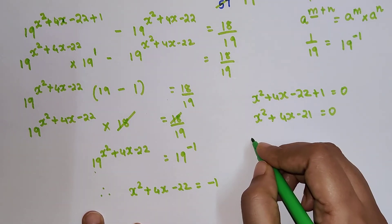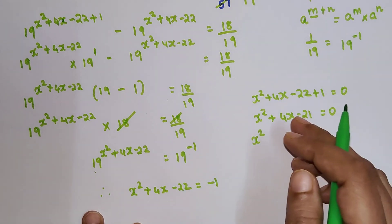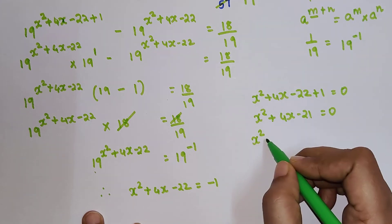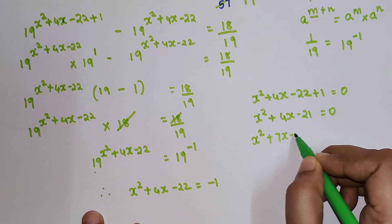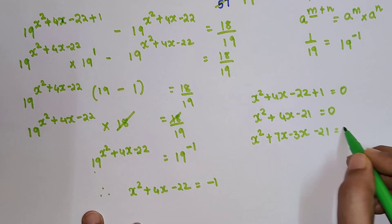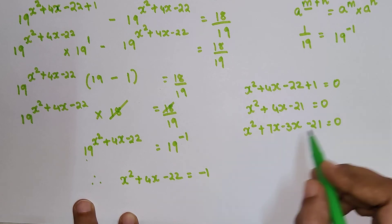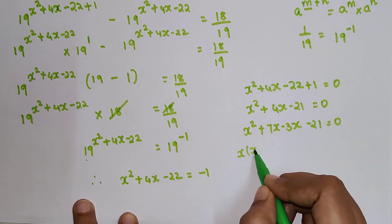To find this, I can factor 21 as 7 and 3. 7 and 3 on subtraction give you 4, so +7x -3x. Multiply: +7 × -3 gives you -21. That is how we split the middle term. So we have x(x+7) -3(x+7).